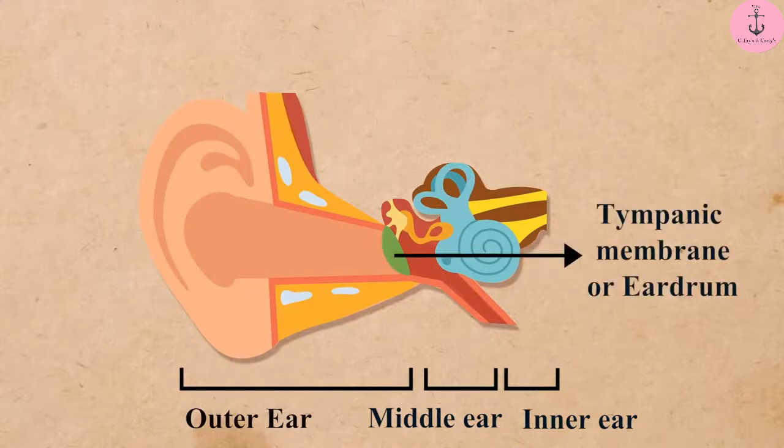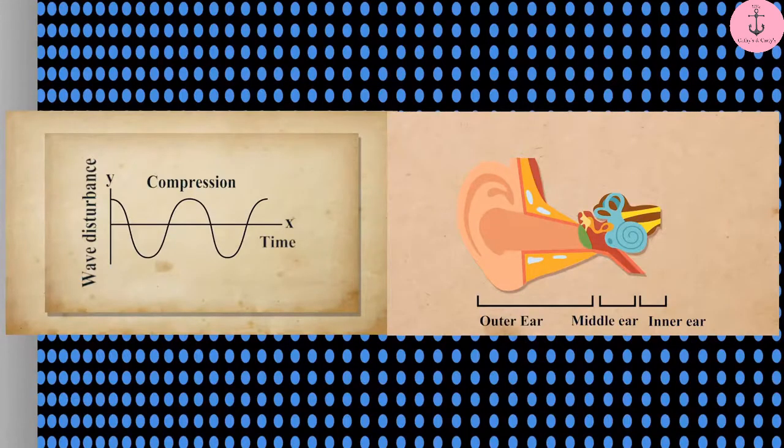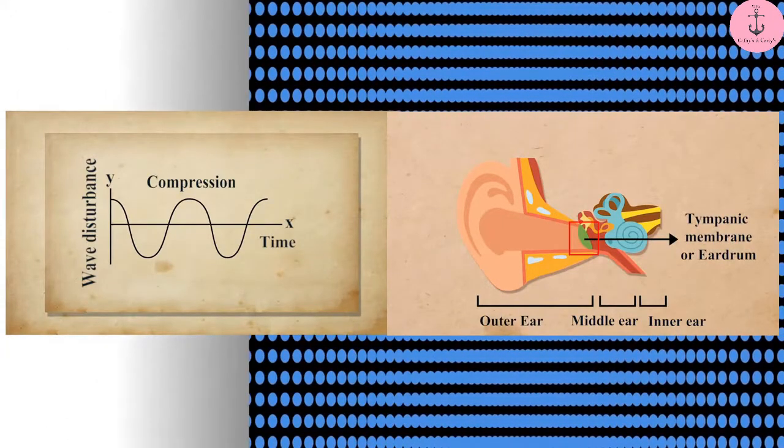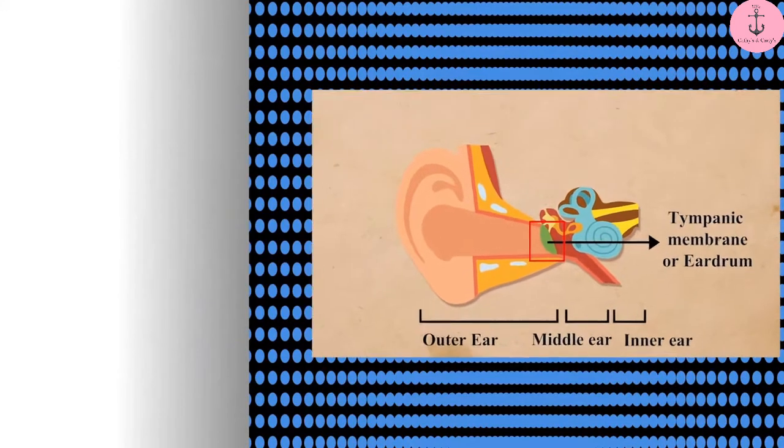Then, the sound reaches the ear drum or the tympanic membrane. Whenever a compression of the medium reaches the ear drum, it increases the pressure outside the membrane and forces the membrane inward.